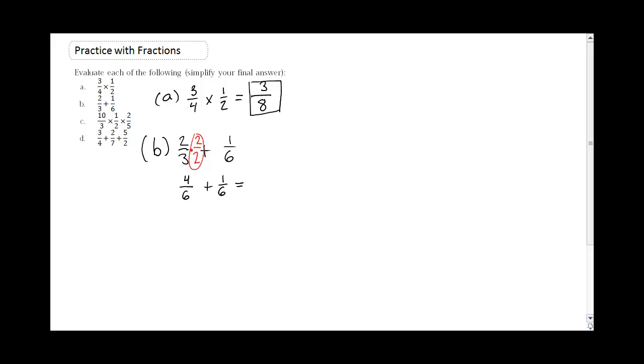So now that's 4 sixths plus 1 sixth. And I have a common denominator, which is why I chose the 2, because I knew 3 times 2 would give me 6 for a denominator, and that would match this one.